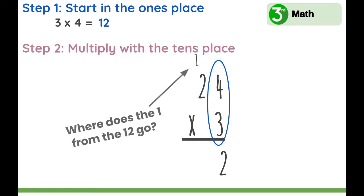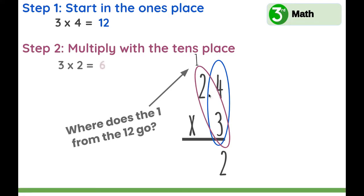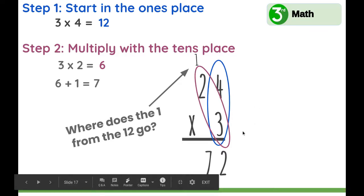Next, let's multiply with the tens place: 3 times 2. What is 3 times 2? 6, yes. And then we are going to add the number we carried. 6 plus 1 equals 7. 24 times 3 equals 72.